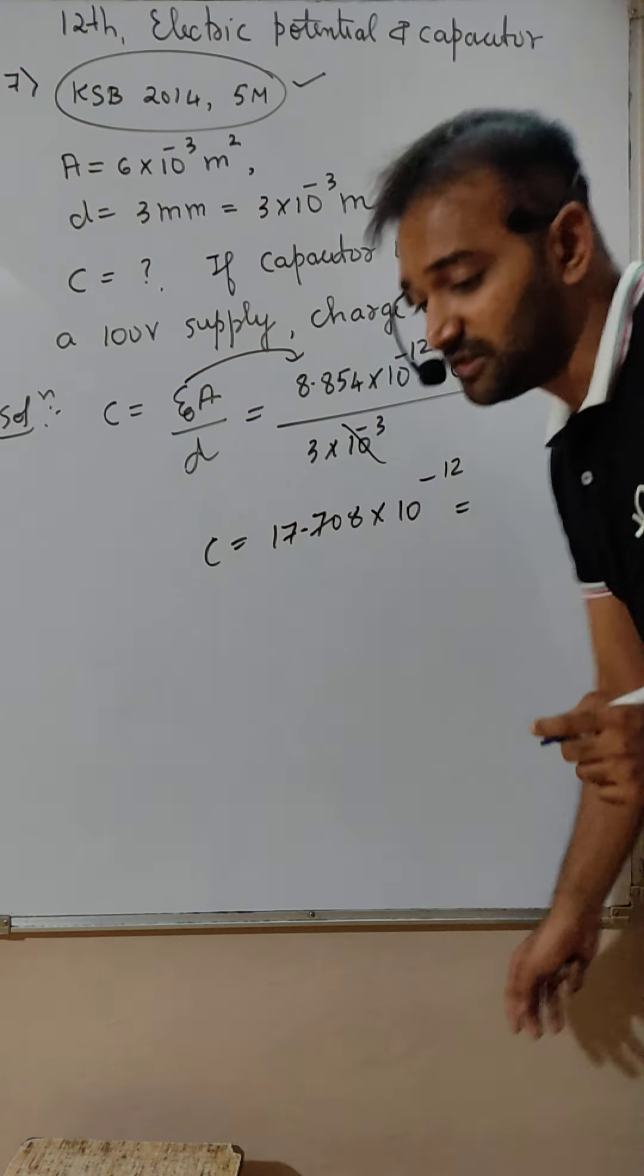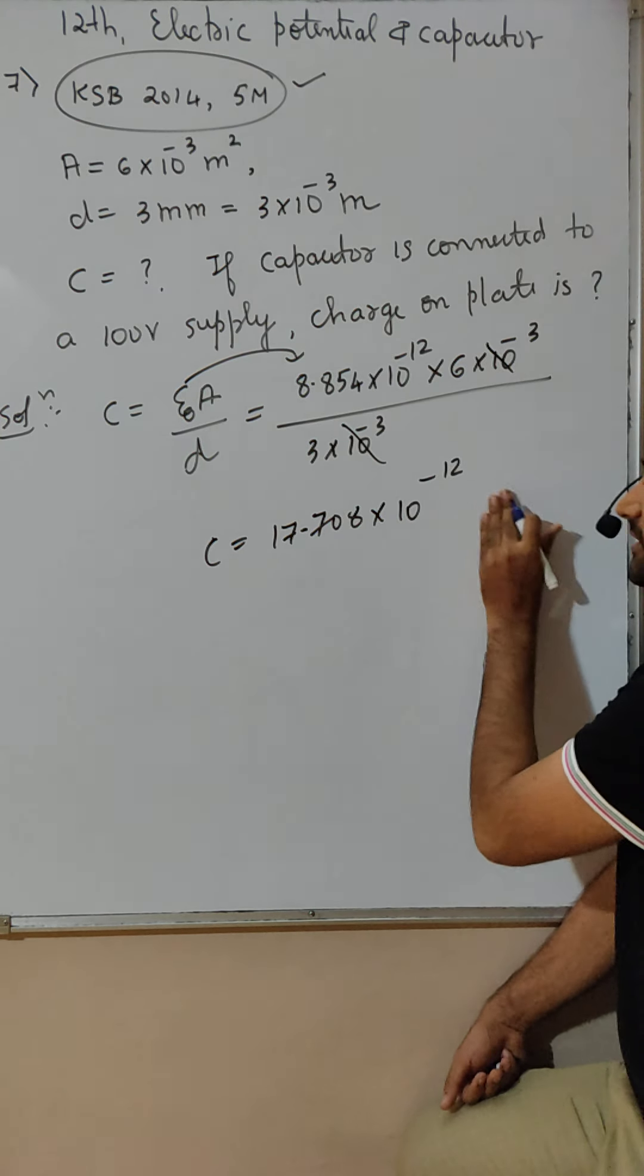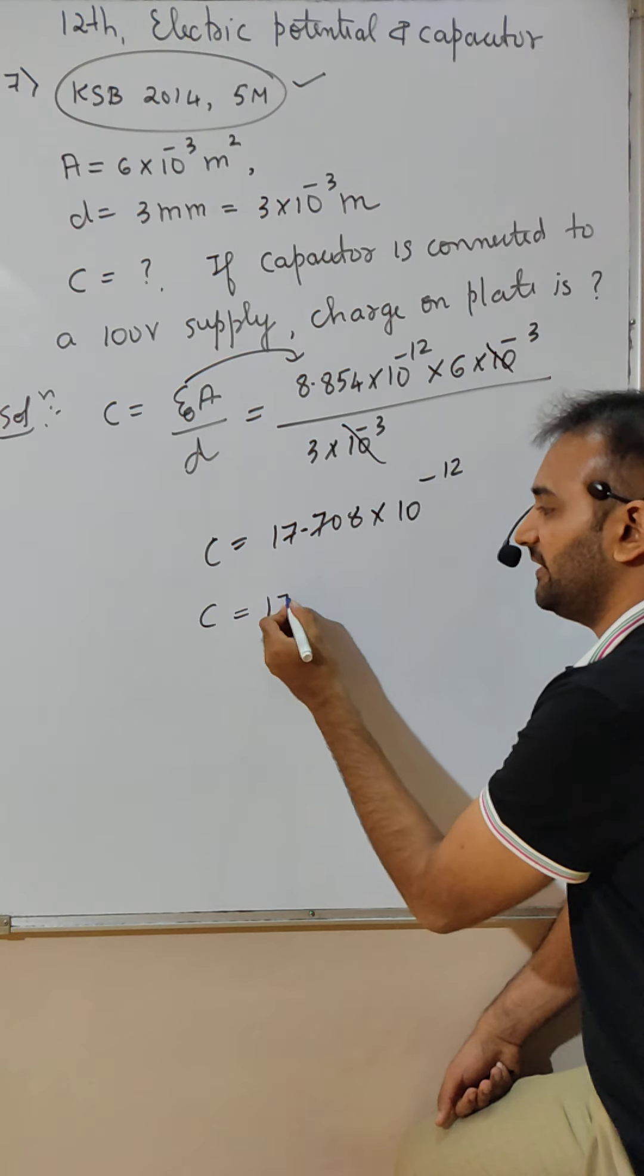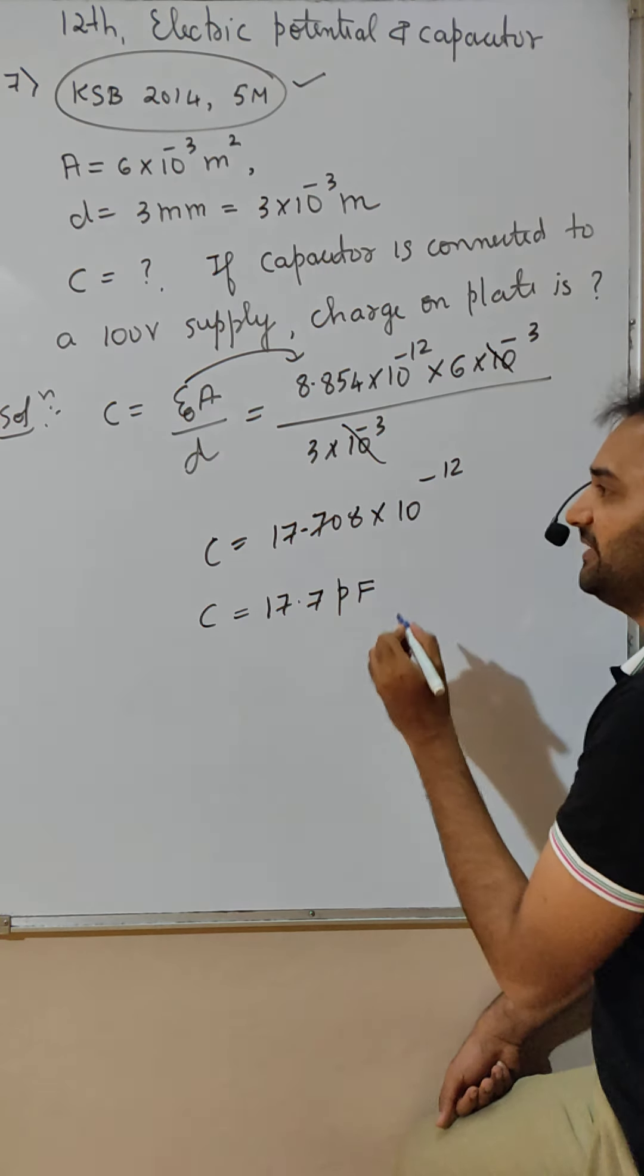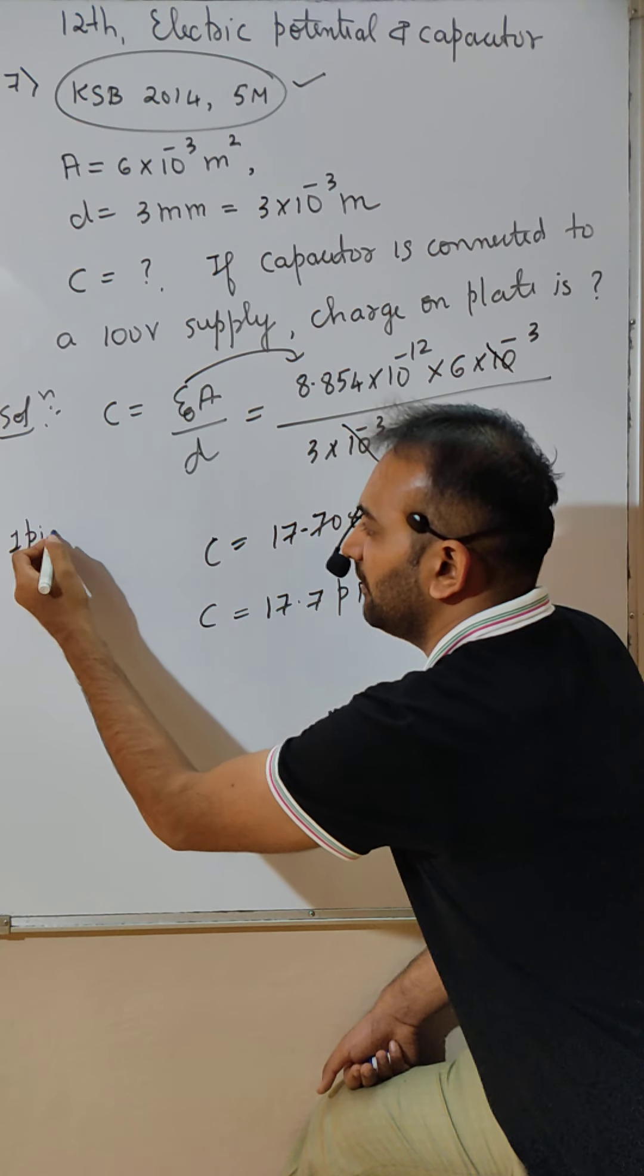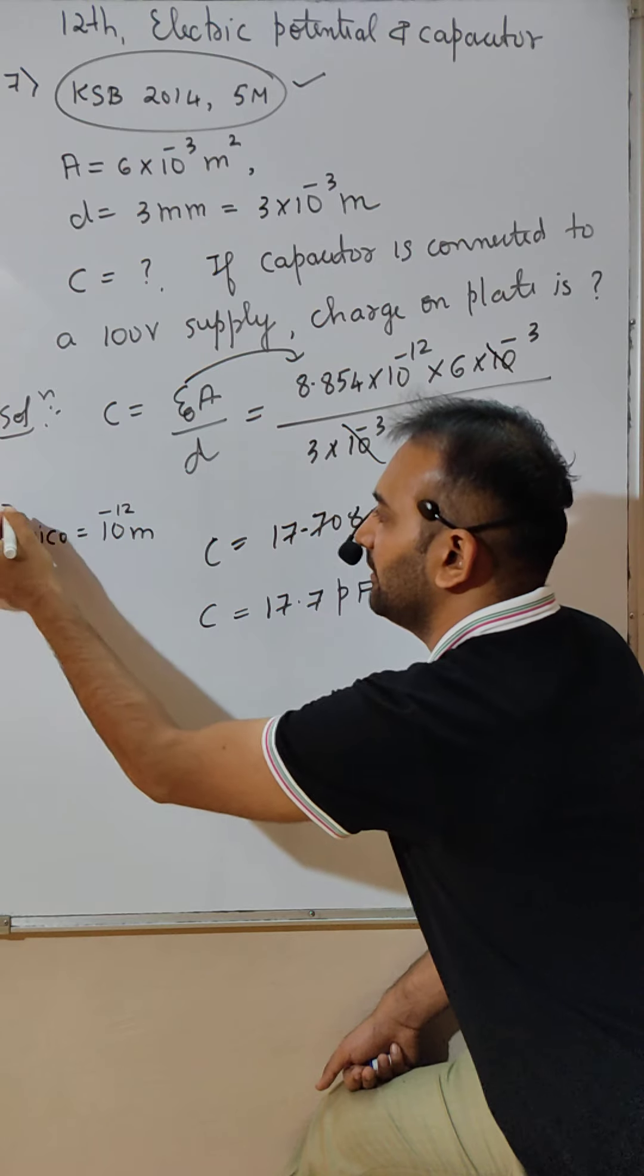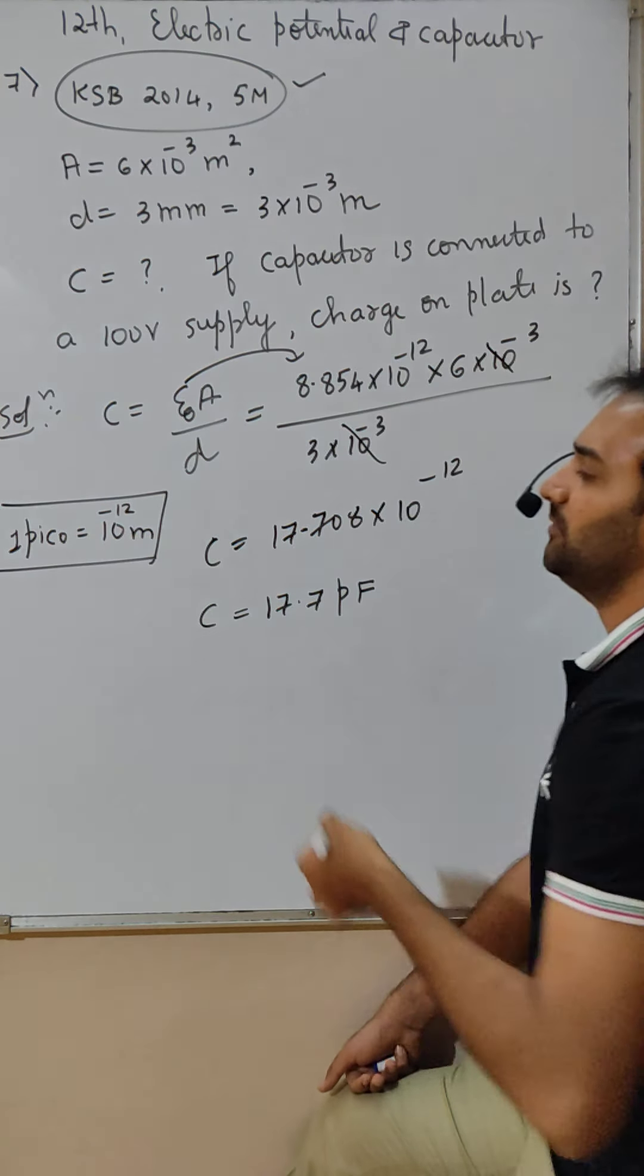For those whose basics are weak, 17.7 picofarad. Please remember, for those whose basics are weak, 1 picofarad is 10 raised to minus 12 meter. So capacitance is this.